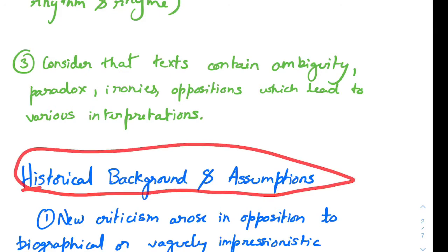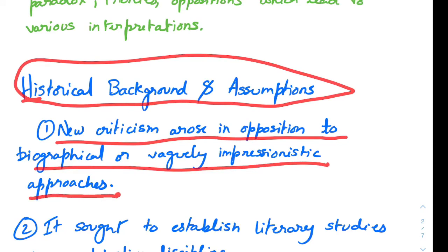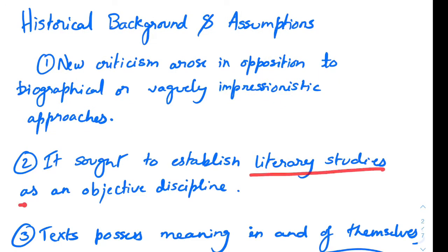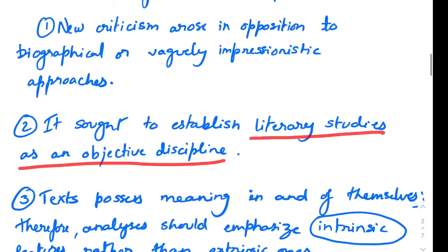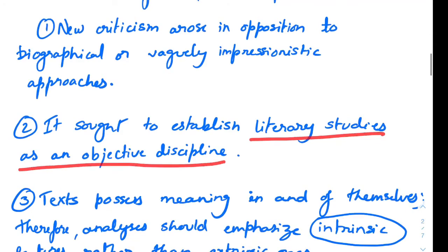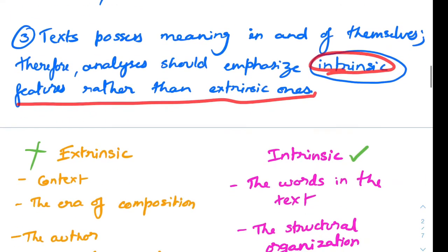Regarding historical background and assumptions: new criticism arose in opposition to biographical or vaguely impressionist approaches. It sought to establish literary studies as an objective discipline — because here we are just studying things within the text, not looking at the author's background. Texts possess meaning in and of themselves; therefore, an analysis should emphasize intrinsic features rather than extrinsic ones.